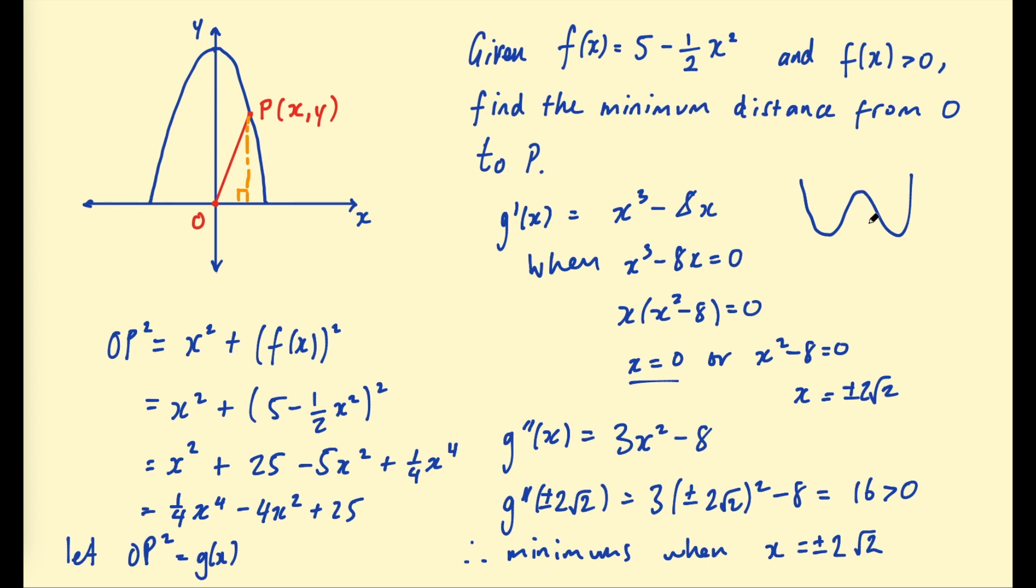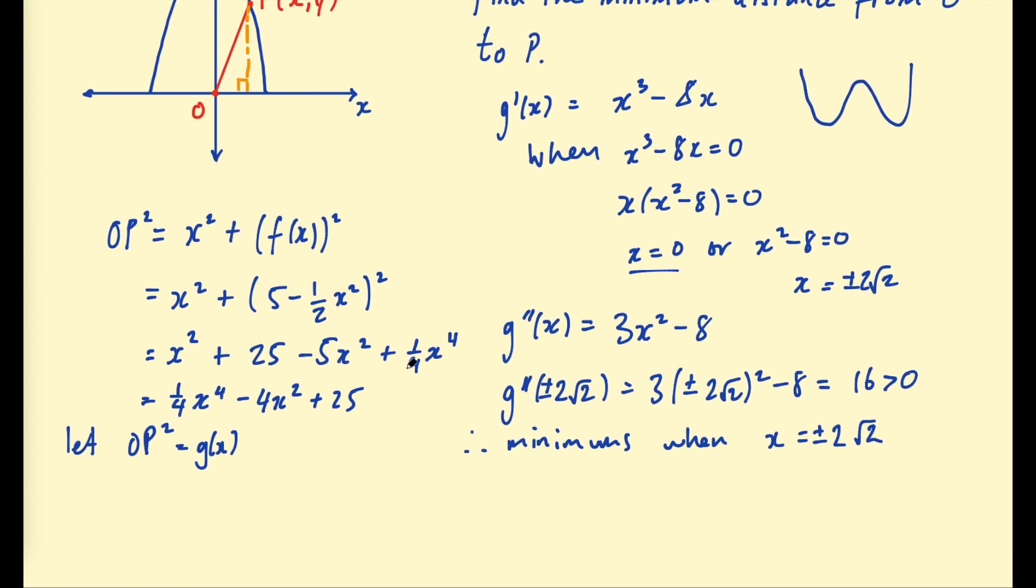So we're almost there. We've found the x value for when the length of OP is at a minimum. We just need to go ahead and plug that into OP and that will give us the minimum length. So plugging in 2 root 2 into this expression here. If I plug it in here, that looks like the easiest. So let's say OP squared equals 2 root 2 all squared plus 5 minus a half times 2 root 2 all squared. 2 root 2 squared all squared. And evaluating this, this is 8. 2 root 2 squared is 8 plus a half times 8 is 4. So in the brackets here, we've got 5 minus 4 all squared, which is 1. So in the end, we get 8 plus 1, which is 9.